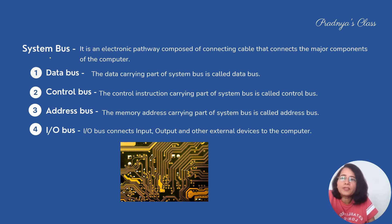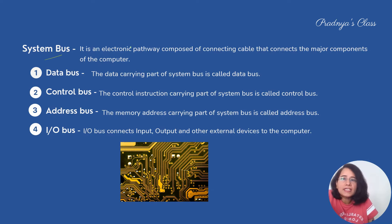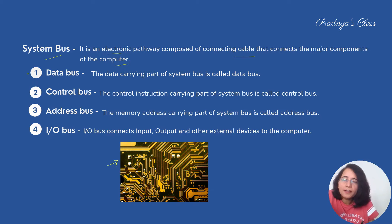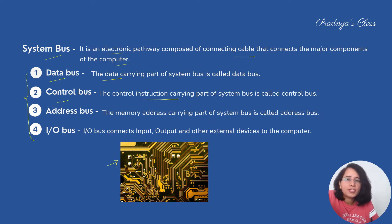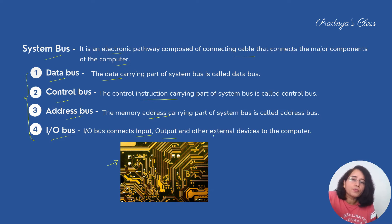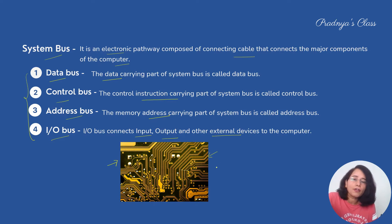The next topic is the system bus. Just as a bus in real life carries people from one place to another, in a computer the bus carries data and signals. It is an electronic pathway composed of cables that connects the major components of the computer. There are different types of bus: the data bus carries data, the control bus controls the instruction-carrying part, the address bus carries addresses, and the I/O bus connects input, output, and external devices. All components of the computer are attached through these cables on the motherboard.